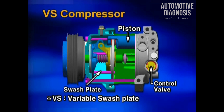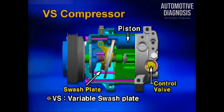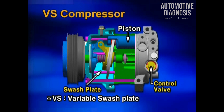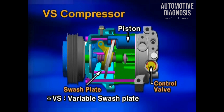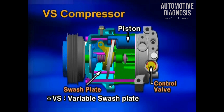The variable swash plate compressor is applied. The VS compressor is the compression in which the intake and exhaust amount of the refrigerant is automatically controlled by the control valve and swash plate installed in the compressor, according to the changes of the cooling load.